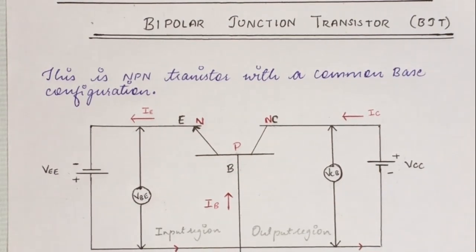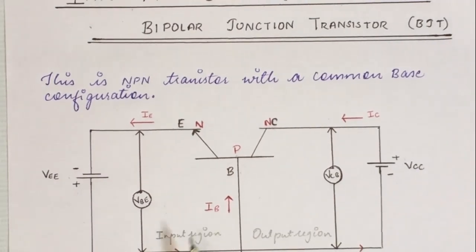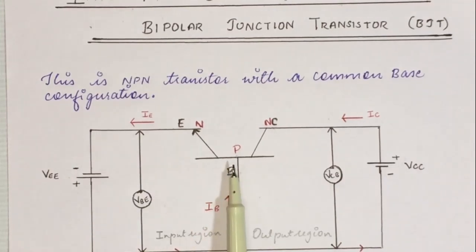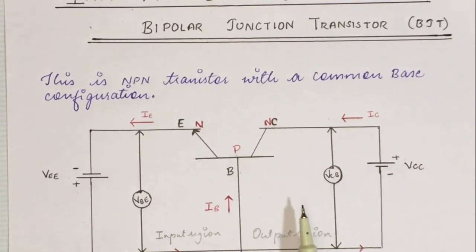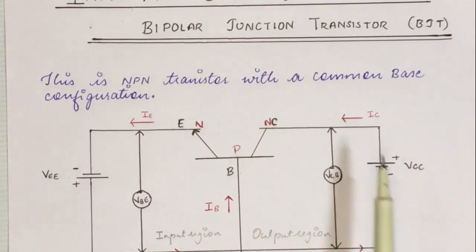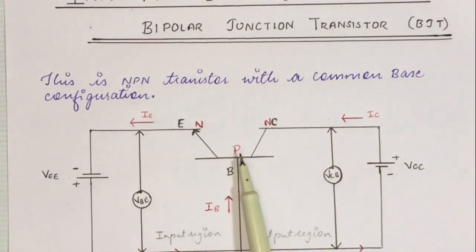To connect a transistor in active mode, we have to connect its emitter junction in forward bias. On the other hand, the collector junction should be kept reverse biased. For the input circuit to be kept in forward biased condition, its N-type is connected to the negative side of the battery and P-type to the positive side. For the output circuit to be kept in reverse bias, its N-type is connected to the positive side and P-type to the negative side of the battery.